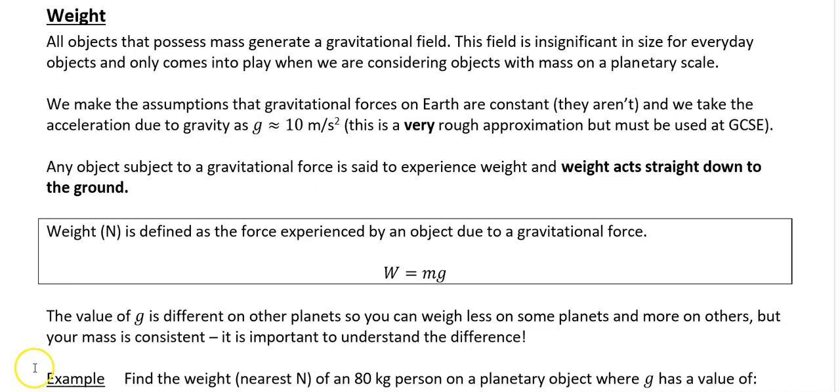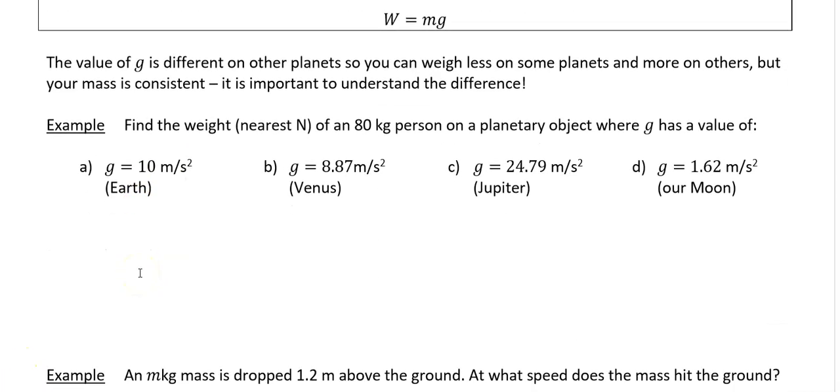We are going to be looking at a couple of examples. It says to find the weight to the nearest newton of an 80 kilogram person on a planetary object where g has a value of, and the first one is g is equal to 10. So this is on earth. We will just say mg, that is what your weight is. It is just going to be 80 times 10, which is just going to be 800 newtons. So on earth this person has a weight of 800 newtons.